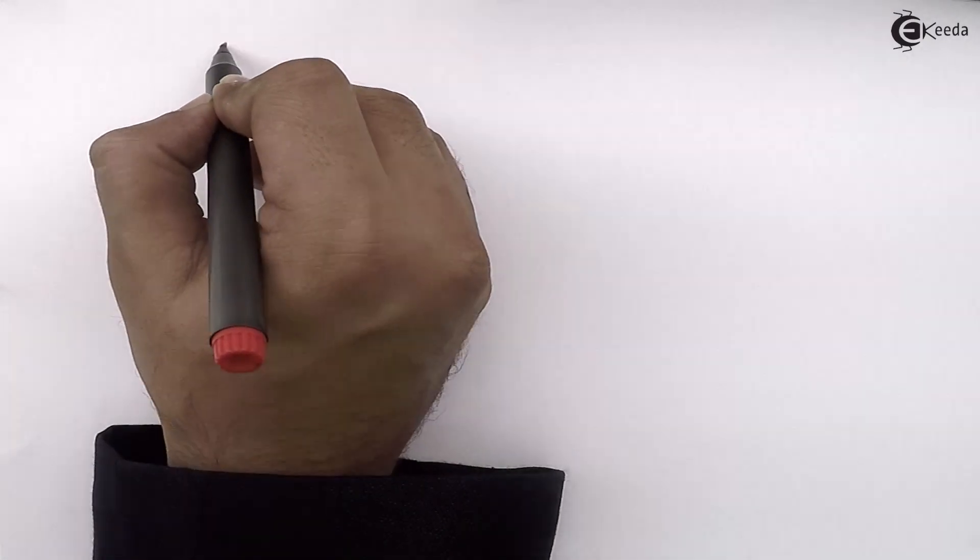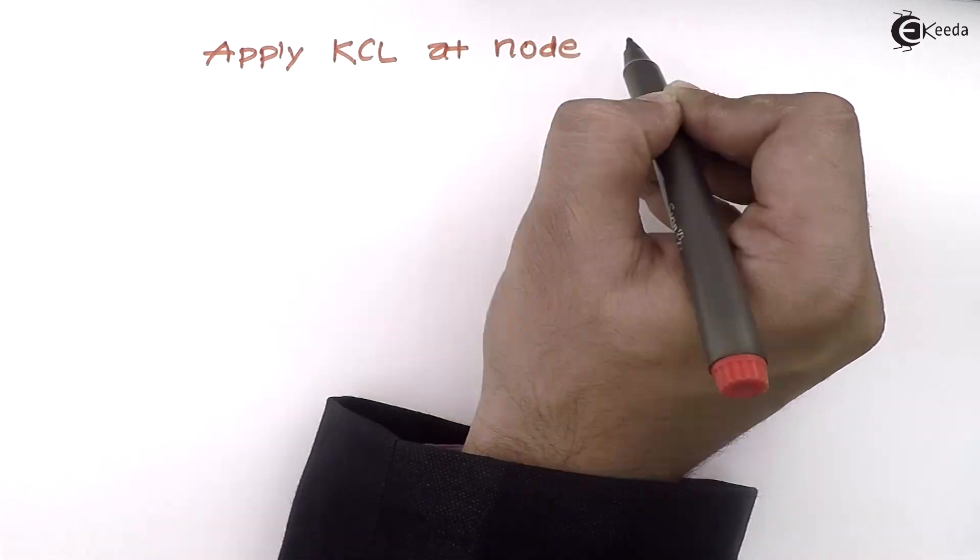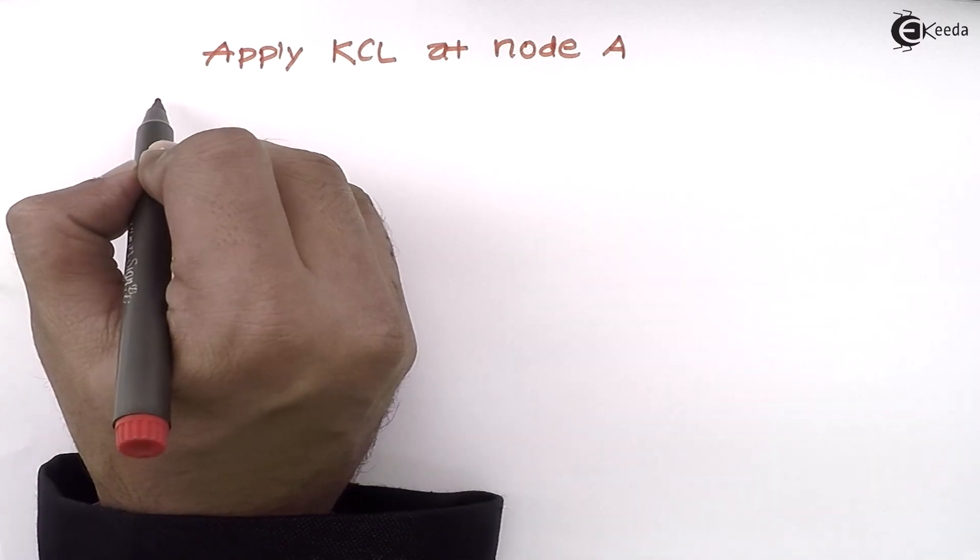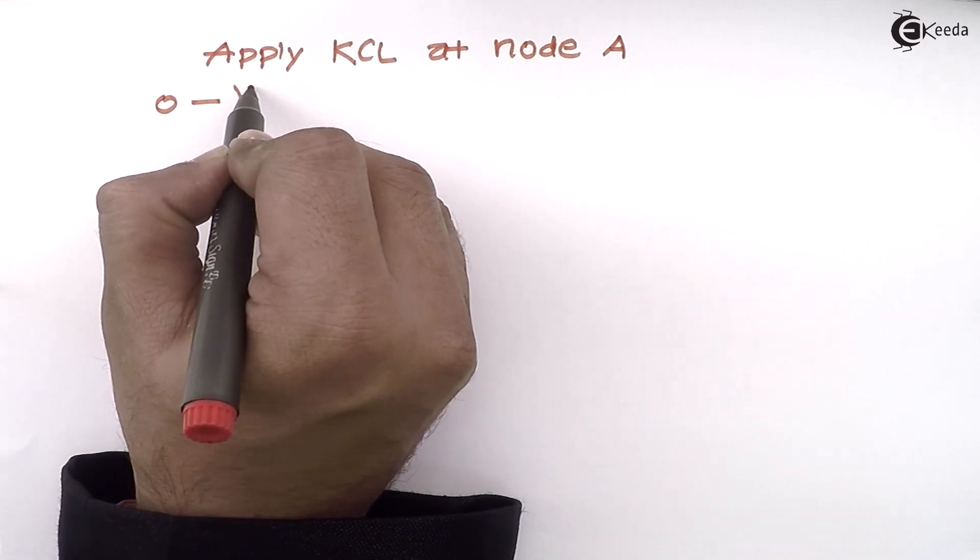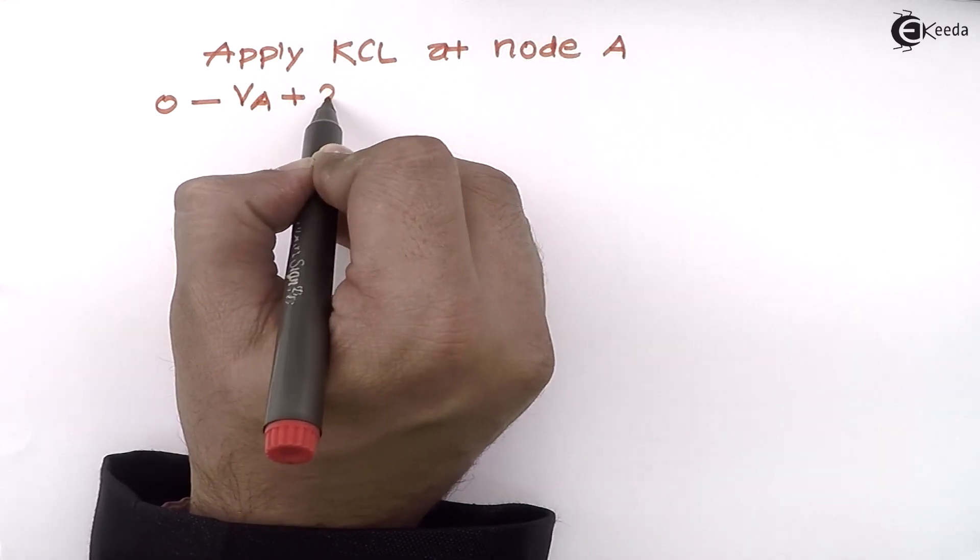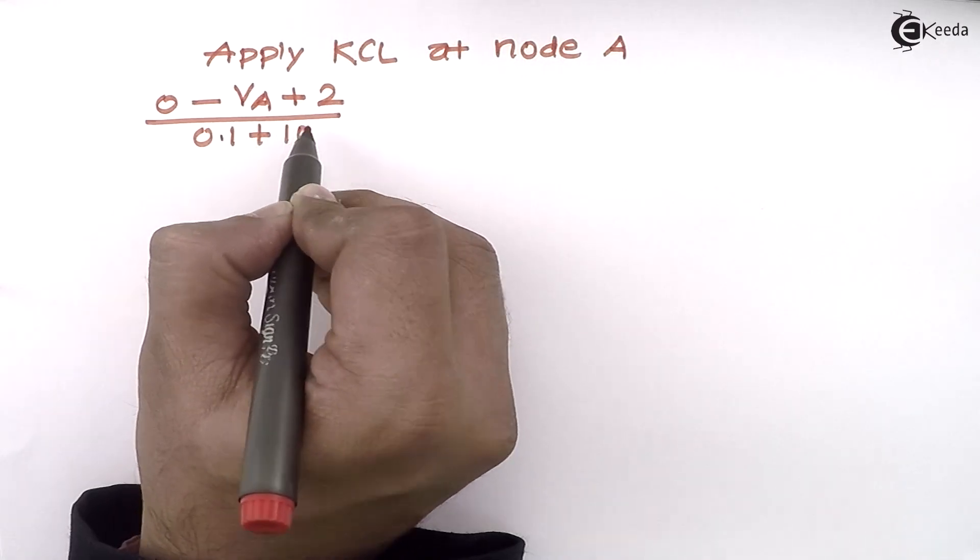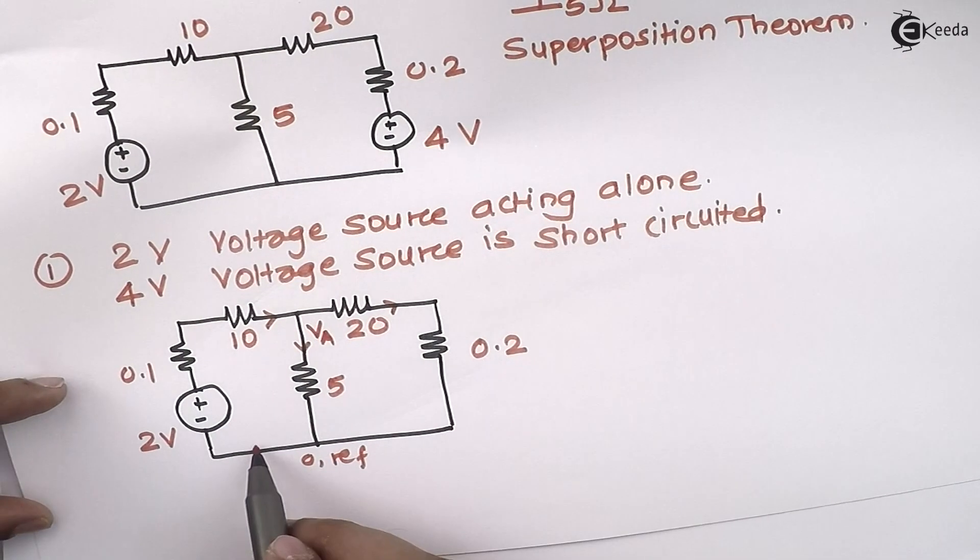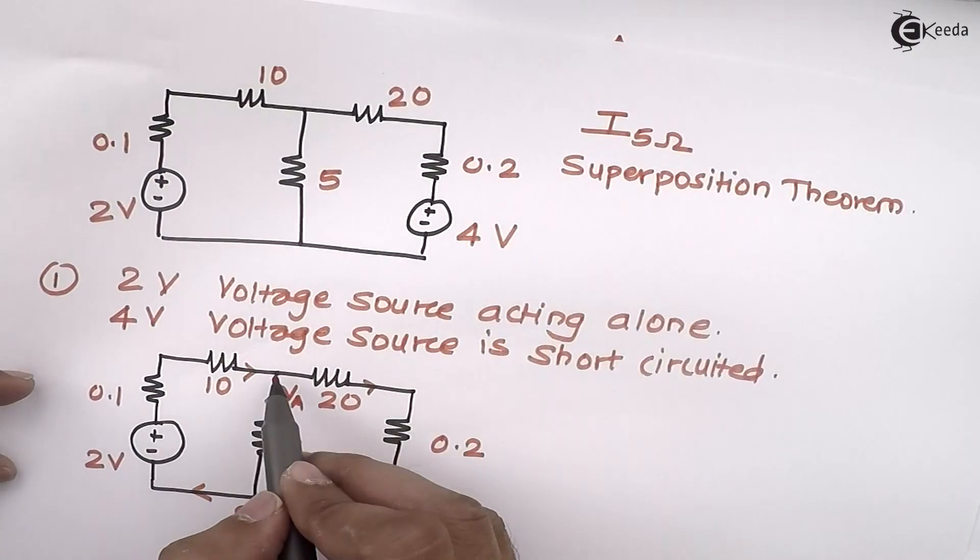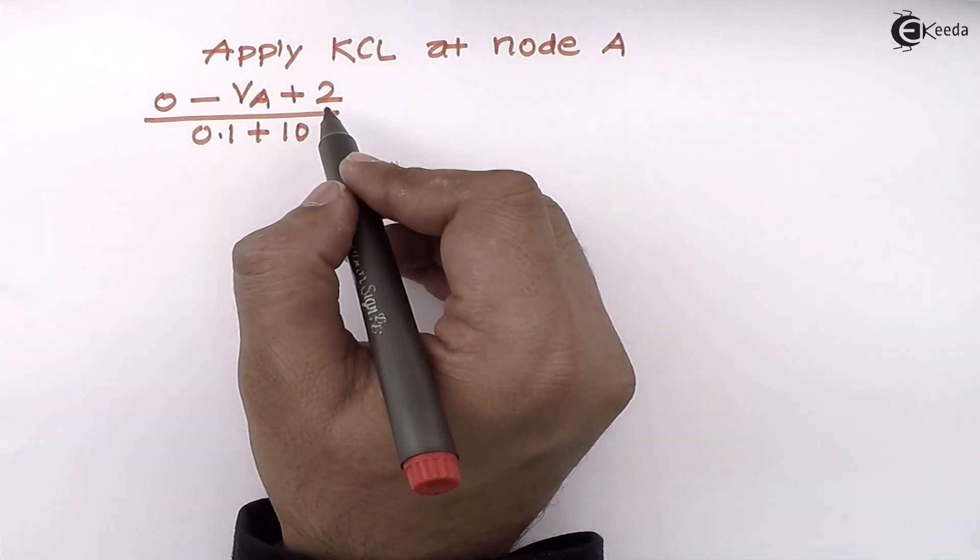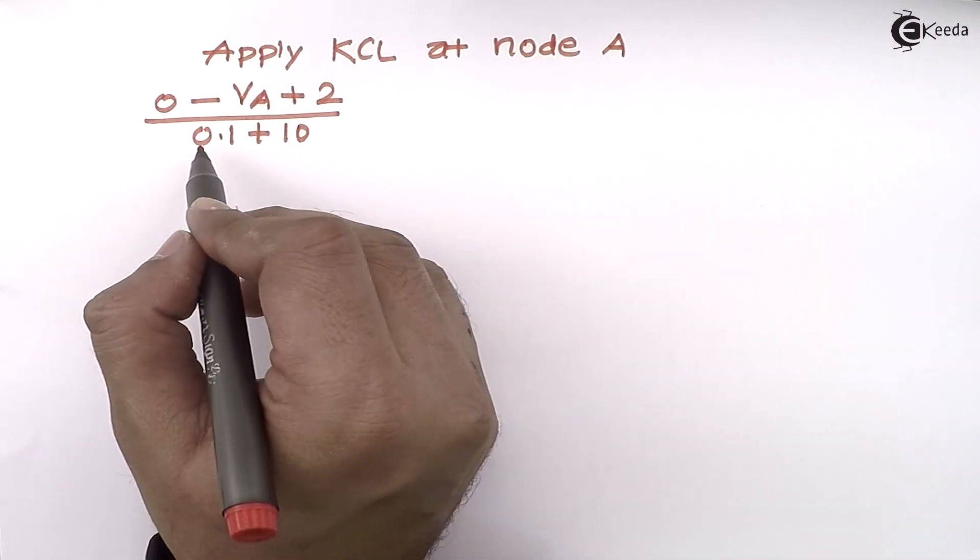Now KCL at node A needs to be applied. While writing the equation of KCL at node A, I am getting (0 - VA + 2) divided by (0.1 + 10). I am writing an equation for this branch current starting at reference, ending on A. In the direction of current I am having a voltage rise, so plus 2 I have mentioned, divided by total resistance in the branch, 0.1 plus 10, equal to (VA - 0) divided by 5, plus (VA - 0), total resistance is 0.2 plus 20.